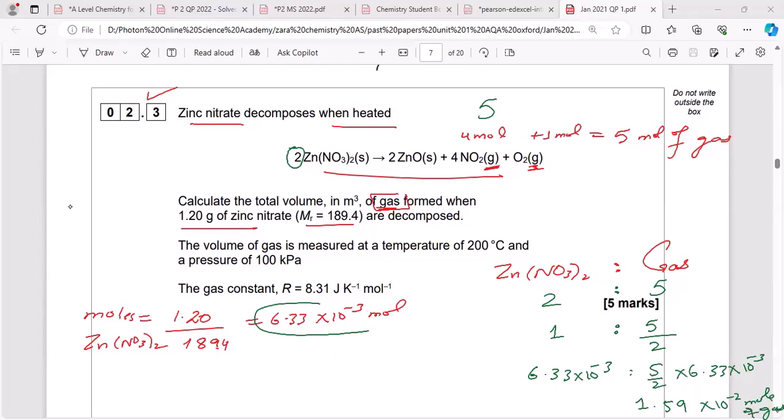The rest is easy. V equals nRT upon P. So here this n is the moles of gas, this is the volume of gas - it's important to say gas. So 1.59 times 10 to the power minus 2 times 8.31 times 473 upon 100,000. Put all of this in your calculator, you will be getting a beautiful answer.